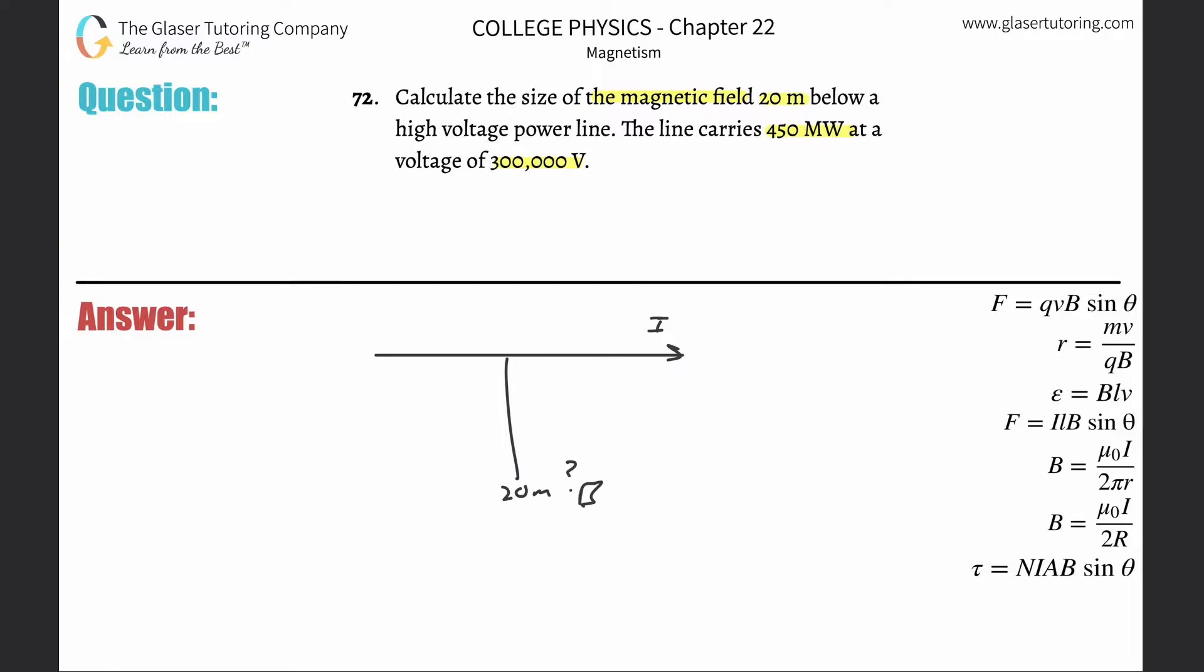Now, if you've got a straight current-carrying wire and you're trying to find the magnetic field beneath it, you need this formula: the magnetic field at that particular point is equal to the permeability of free space multiplied by the current traveling through the wire, divided by two, multiplied by pi, then multiplied by the distance—the distance between the current and that particular point of interest.